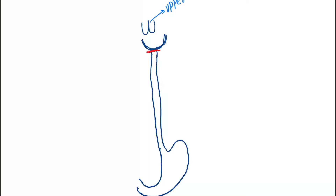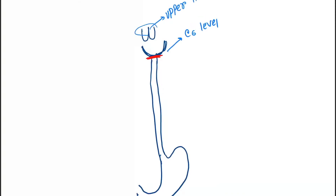There are three constrictions present at the esophagus. The first constriction is at the pharyngoesophageal junction, that is at the C6 level. We will measure every constriction from the upper incisor, so this distance is 15 centimeters. The next constriction is present at 25 centimeters, at the aortic arch and the left main stem bronchus.